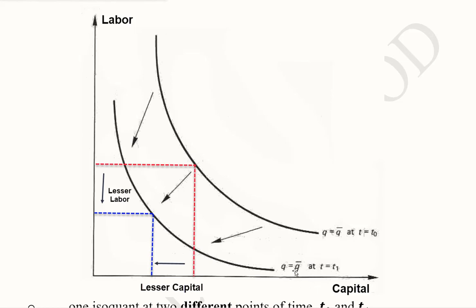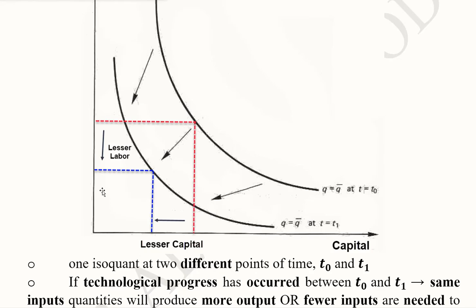And the same output that is q bar is now possible with using less of capital, that is this much. And this arrow shows how much lesser capital is now used. And this much of labor. And this arrow again shows how much the usage of labor has declined.